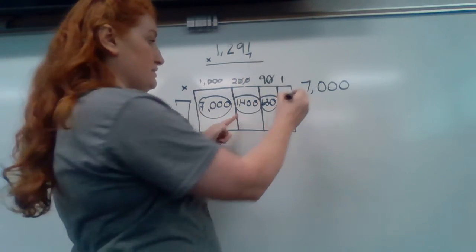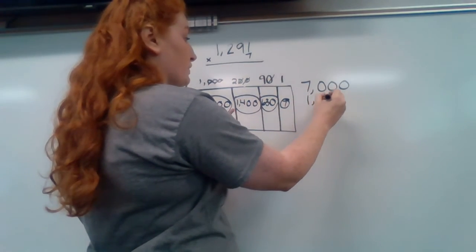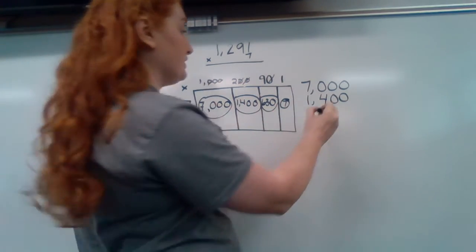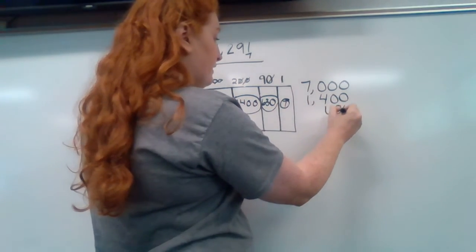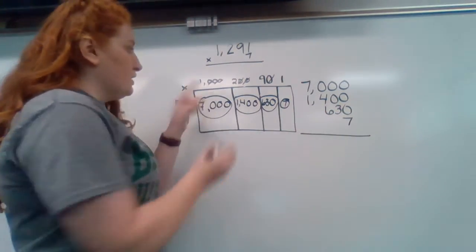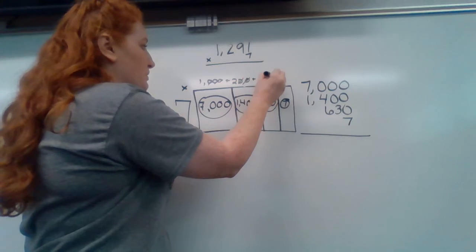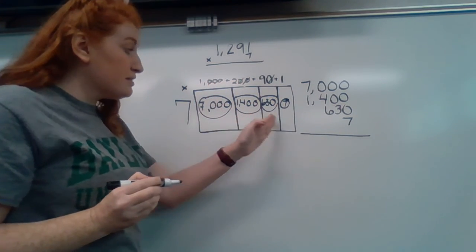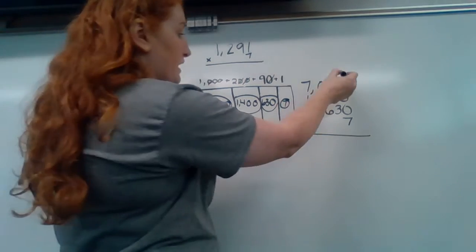So 7000, then we have 1400, then we have 630, and then we have seven. So remember, I sometimes put these little plus signs up top because it reminds me that I have to add everything in these boxes together.